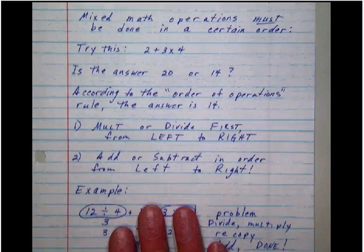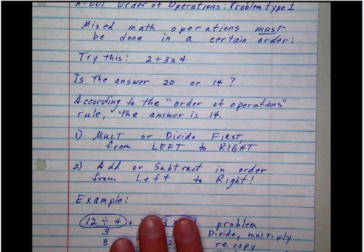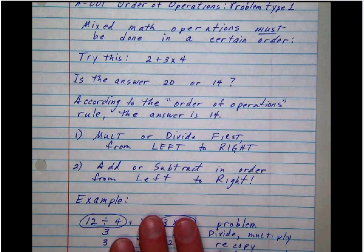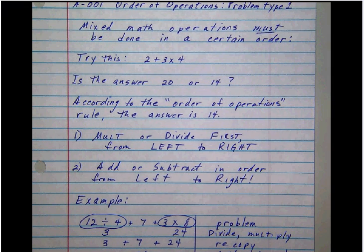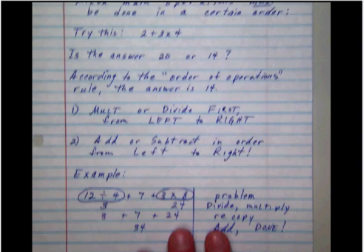And basically what I'm going to do here is explain a little bit about why we do things the way we do. Obviously here the order of operations matters because if you do things in different orders you get different answers. And while we don't like any math problem to have more than one answer, we have decided on this set of rules.